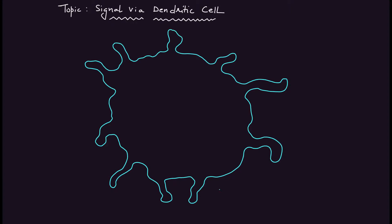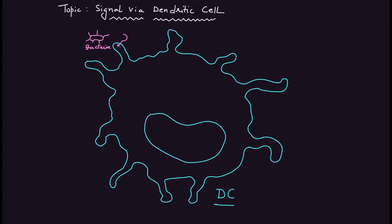I'll design a nucleus in the center since all signaling pathways are directed via the nucleus. Starting with the bacterial pathway: bacteria interact with toll-like receptors — in this case toll-like receptor 4 and toll-like receptor 5 as the ligands for bacterial antigens. Via the nucleus, the cellular signaling output will be in the form of the cytokine IL-12 (interleukin-12), a very important cytokine.